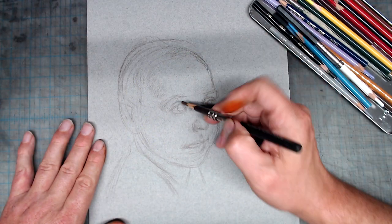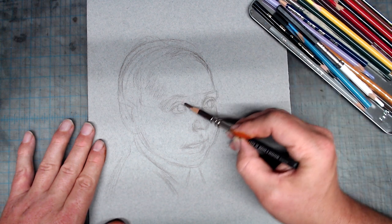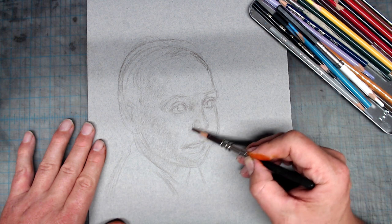Let me show you how this method works with a more complex subject by doing a little portrait of my daughter. Once again, I start this drawing in a neutral color, in this case, brown.